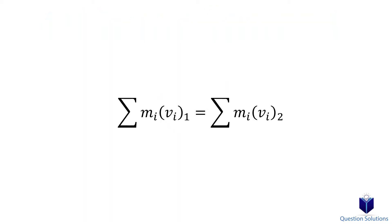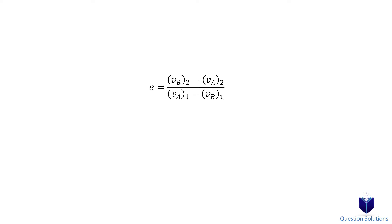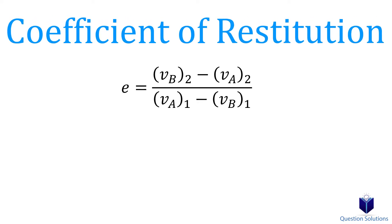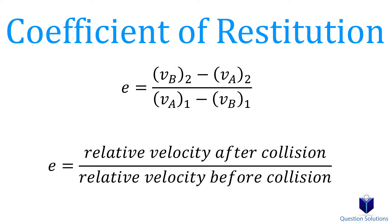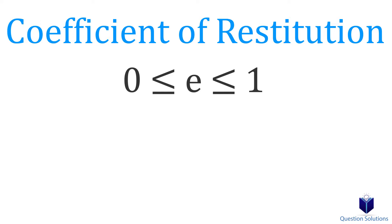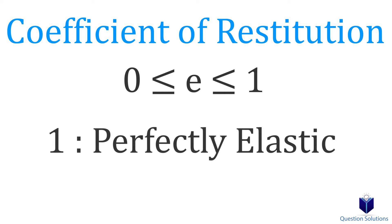Really this chapter is an extension of the conservation of momentum, but we are introduced to an equation called the coefficient of restitution, represented by the letter E. In simple terms, it tells us the ratio of the final velocity to the initial velocity between two objects after they impact. It has a range between 0 and 1. If it's 1, then it's a perfectly elastic collision, meaning no energy is lost during impact.